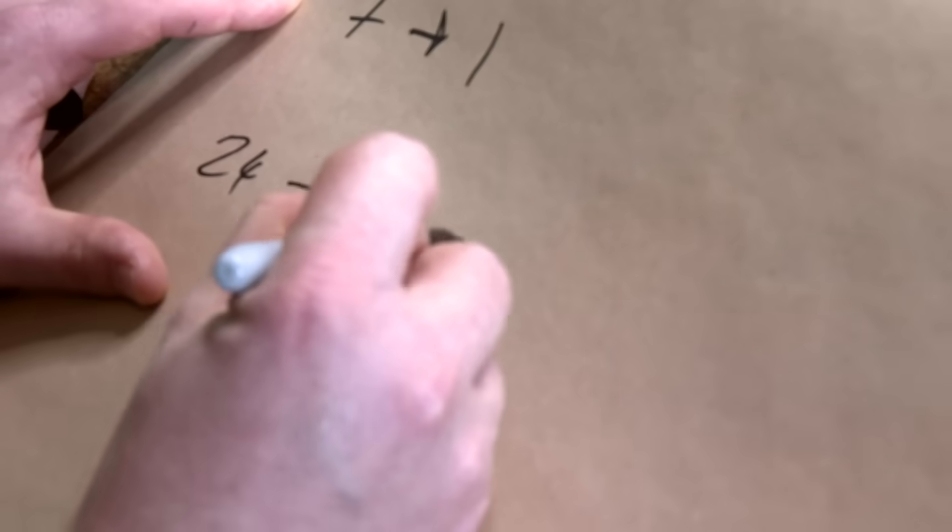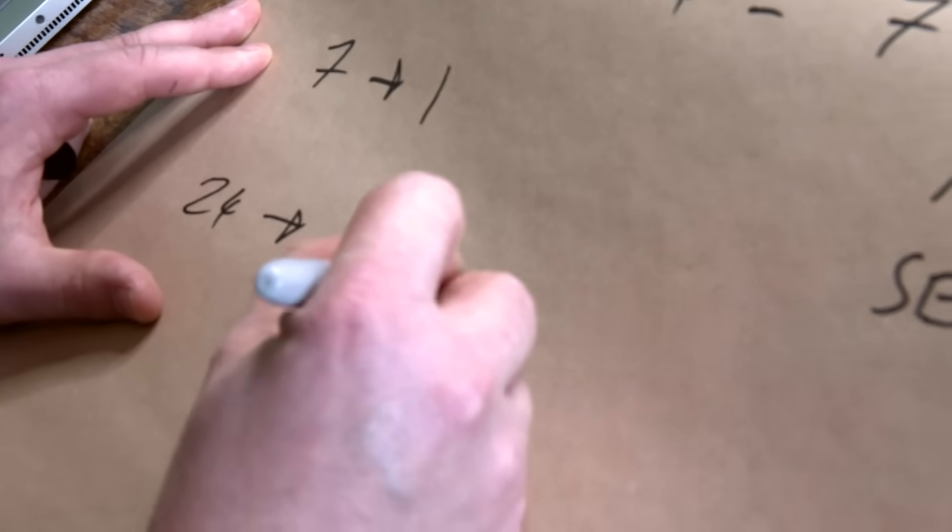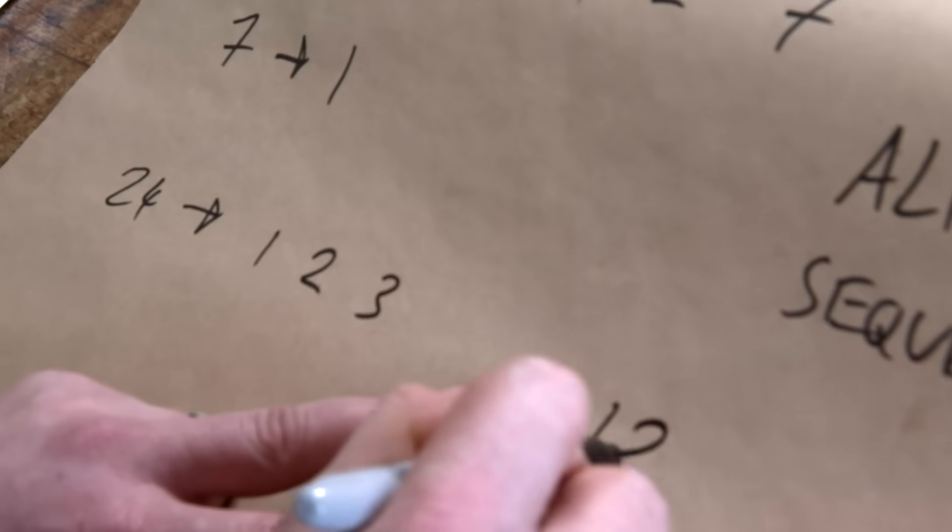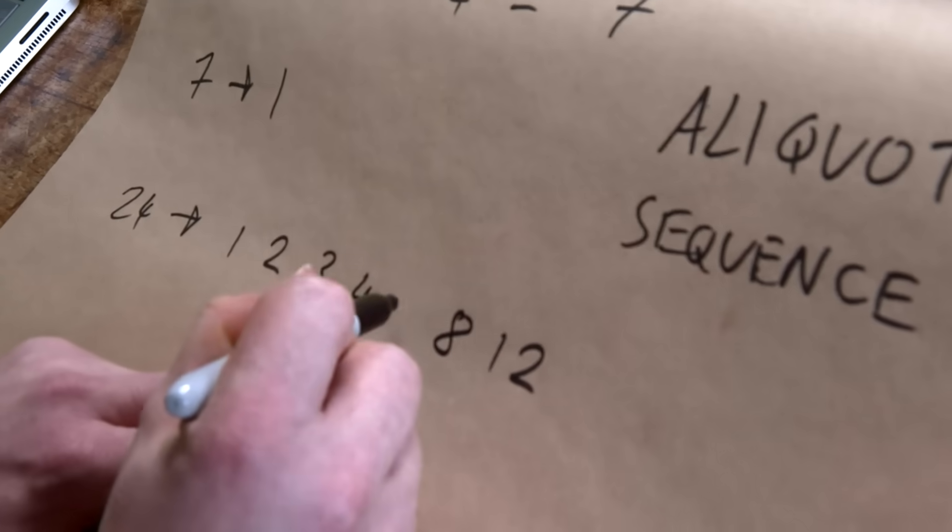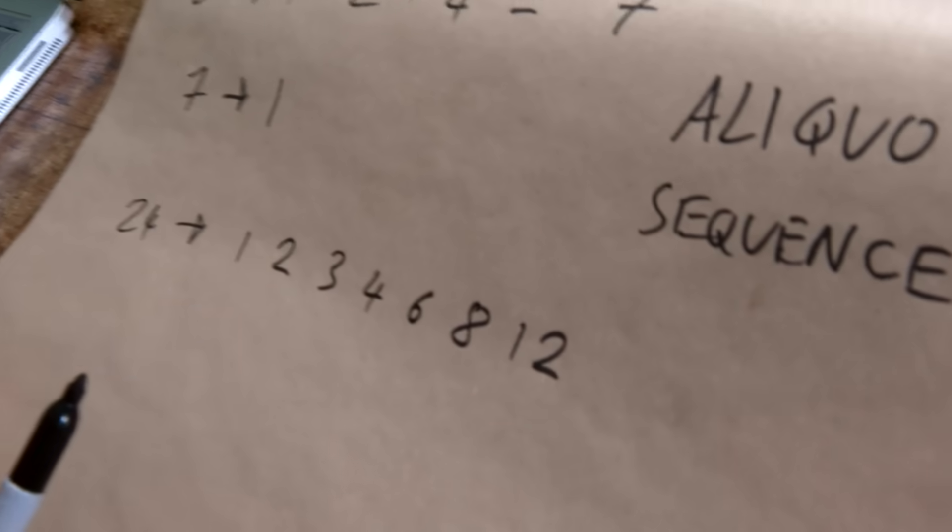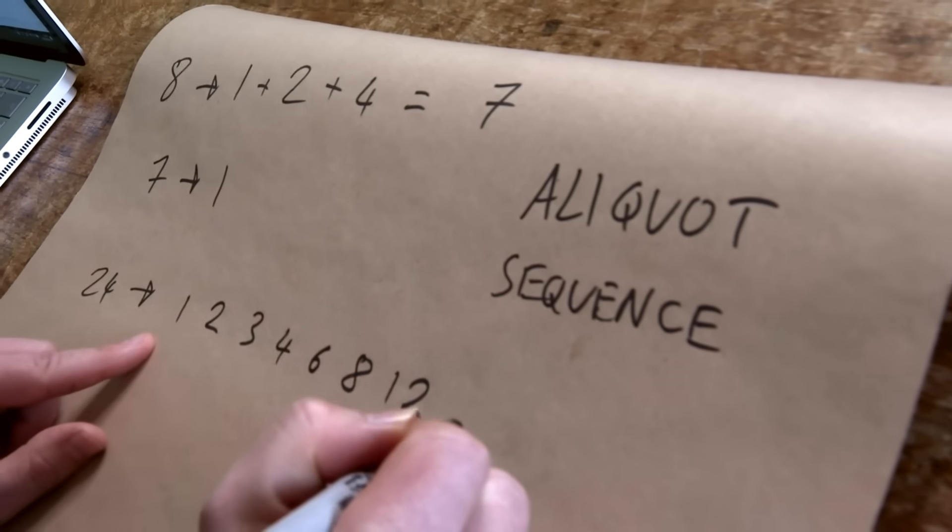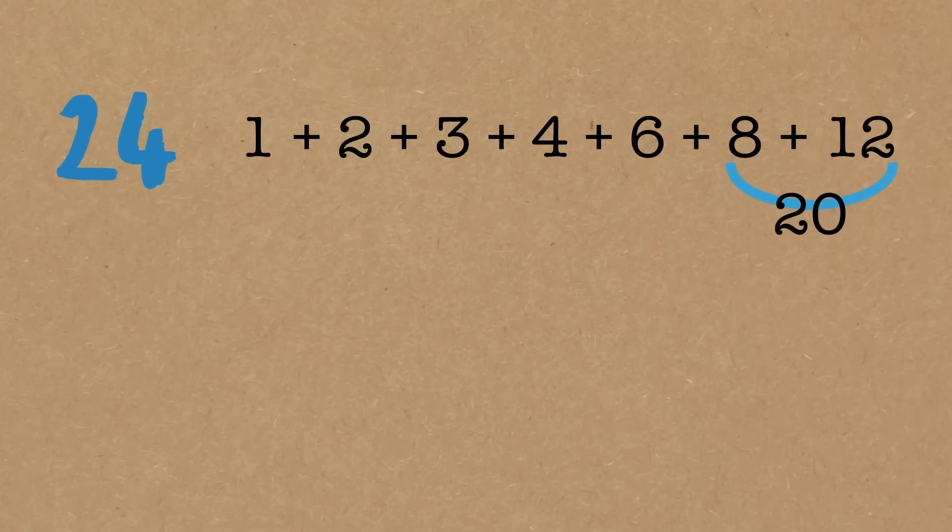1, 2, does 3 go in there? It does. 3. Factors are also useful to do in pairs. If you've got 2, you could probably tell me 12, because 2 times 12, and 3 times 8 is 24. 4 times 6. 24 would go with the 1, but since we're doing proper factors we're not going to include it. Let's just add these up. 20, 30, 36. We've found an abundant number, Brady.